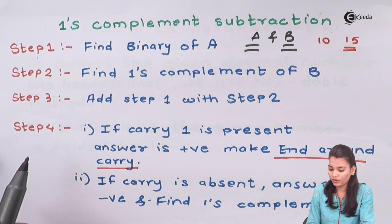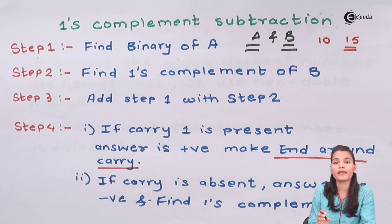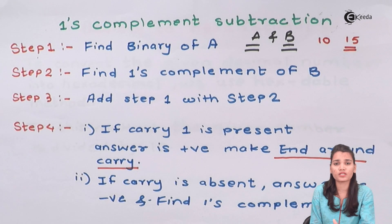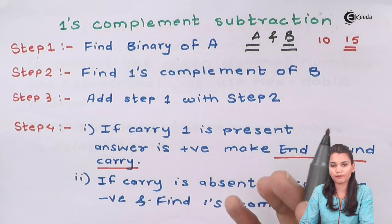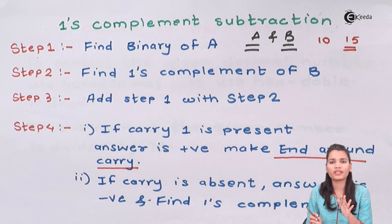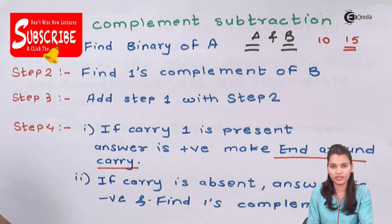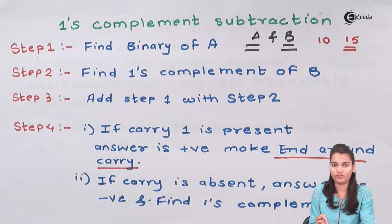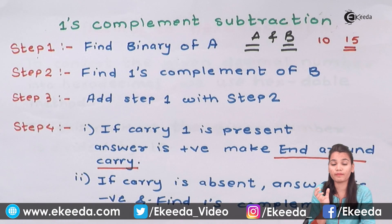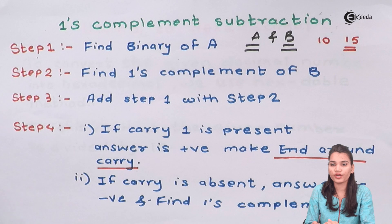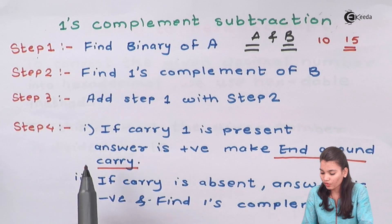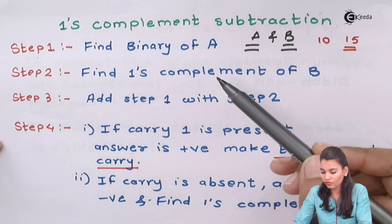Step 4 plays a very important role, because from step 4 you will be able to know whether your answer is positive or negative. In binary, how do you identify whether your answer is positive or negative? We have two numbers — 10 and 15. In normal decimal subtraction, subtracting 10 from 15 gives minus 5. Here also, we have a trick to identify whether the binary subtraction result is positive or negative. From step 3, you get the result of the addition of steps 1 and 2.